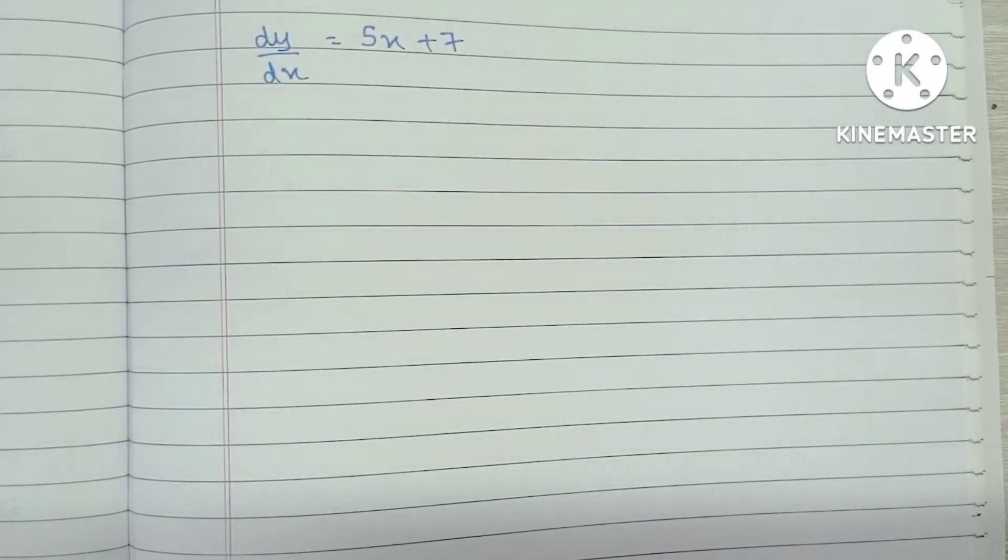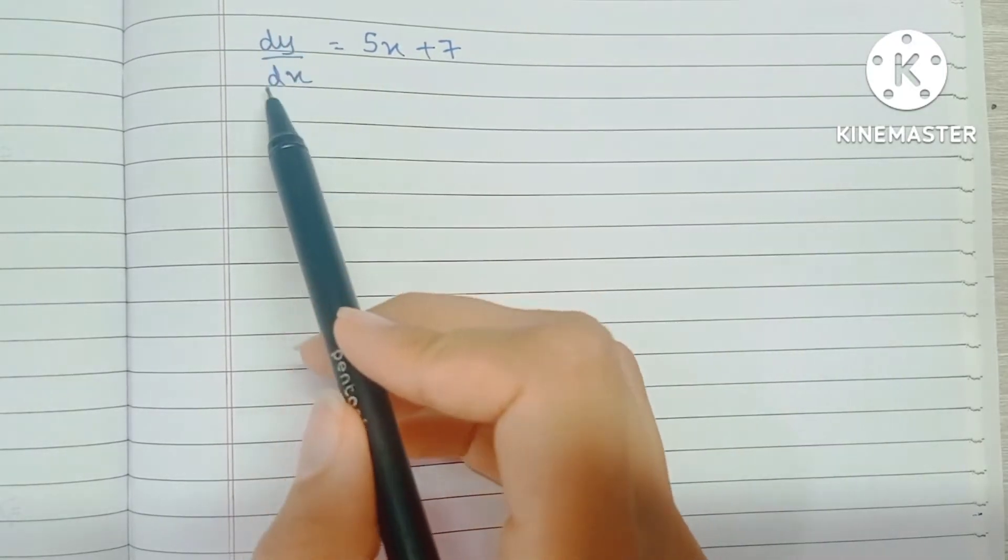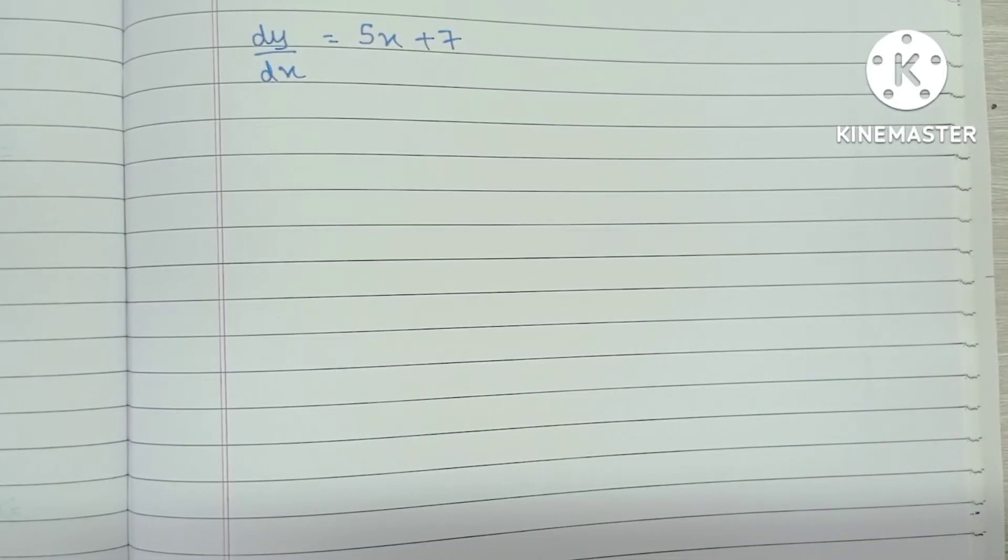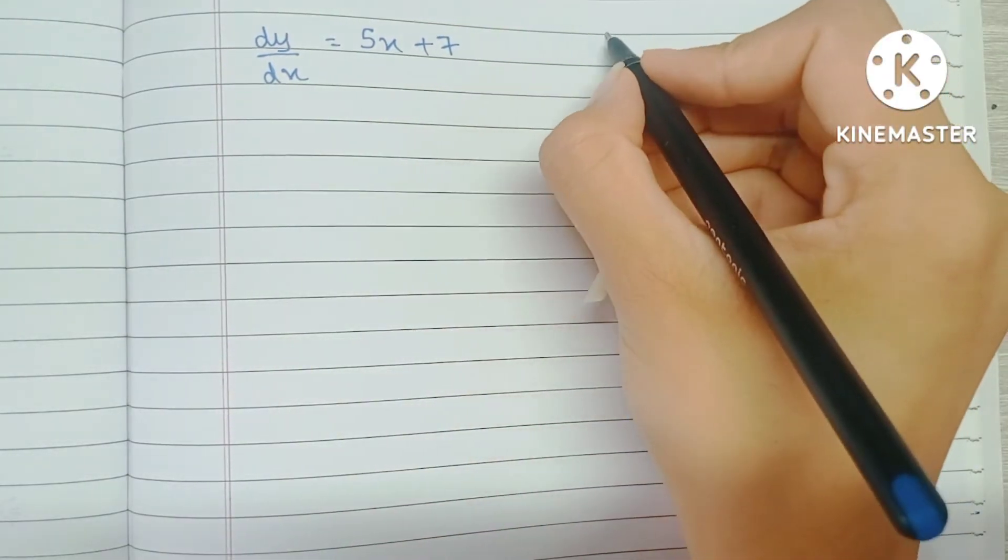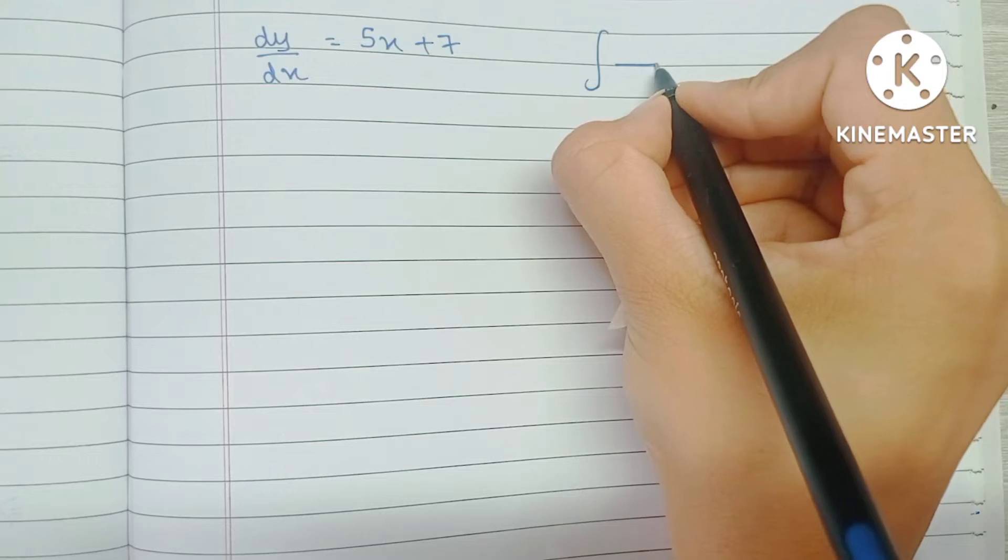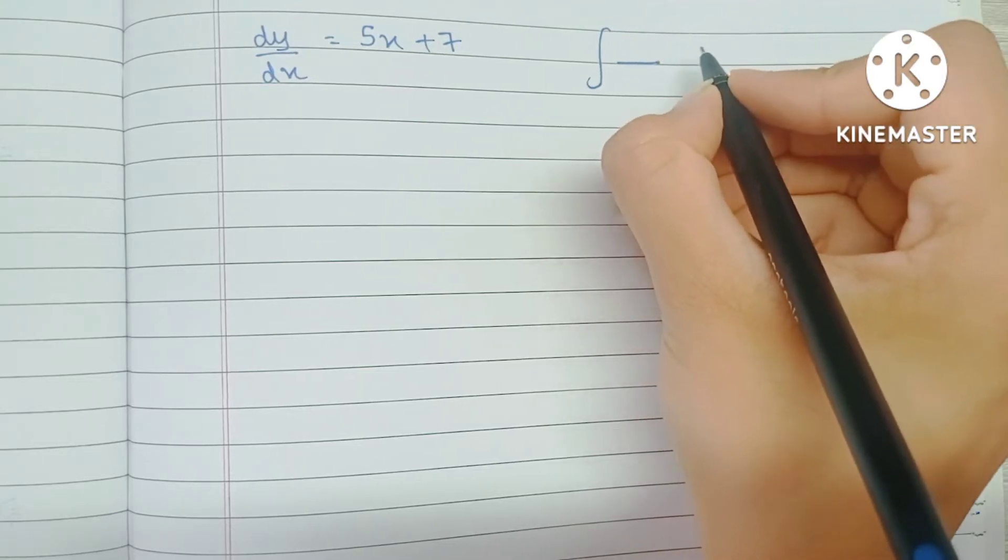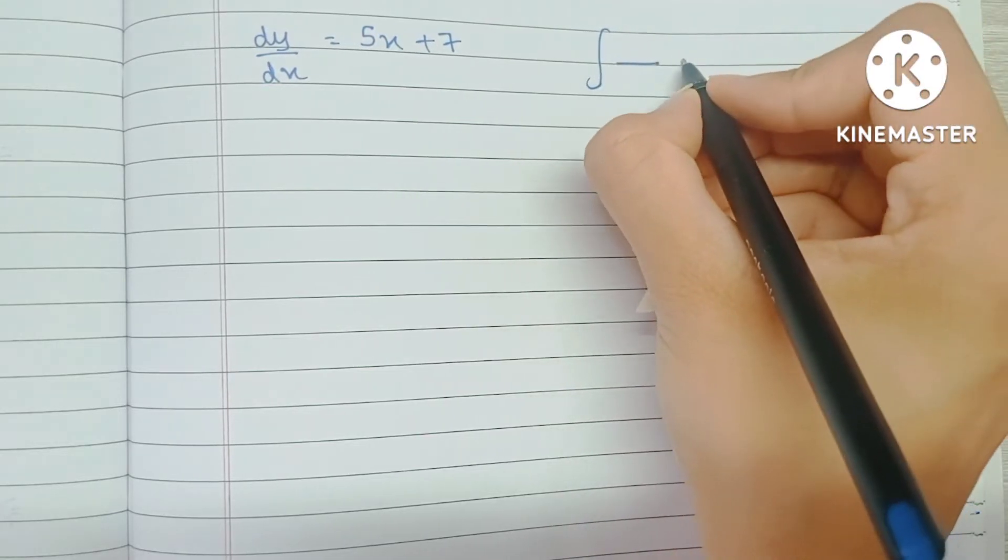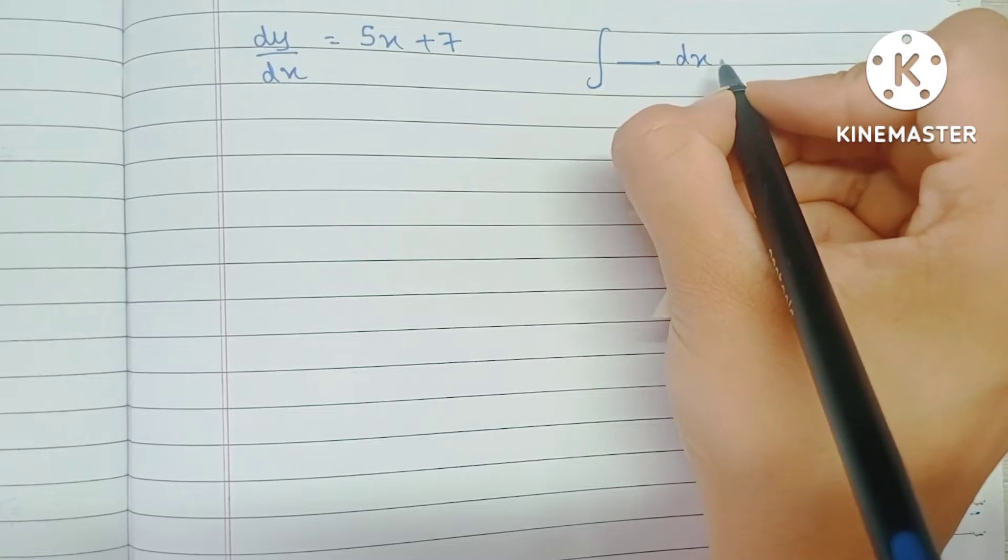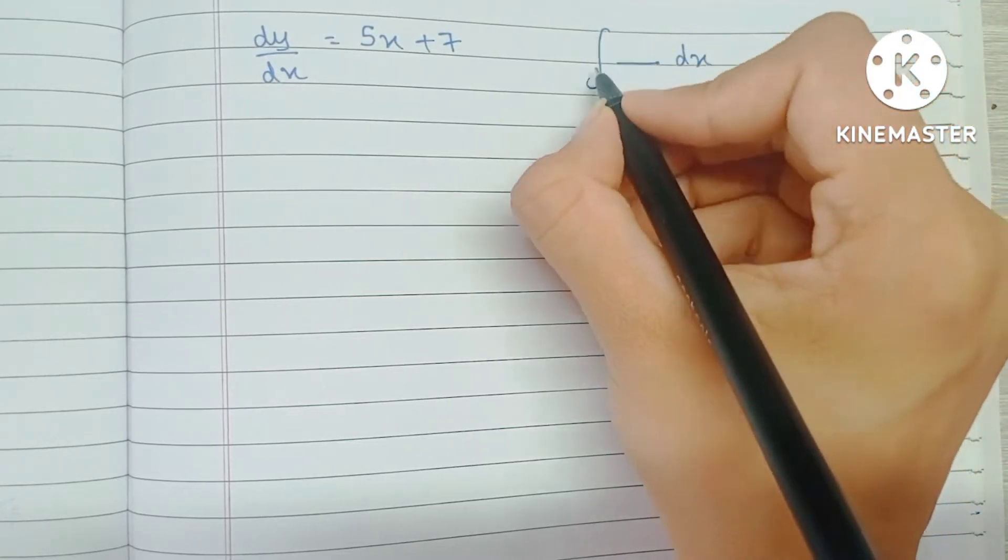We know that integration is the opposite of differentiation, so to remove the differential, we're going to integrate both sides. We also know that integration of some term is always with respect to some variable. Normally we have integration of something dx, which means that we are integrating with respect to x.